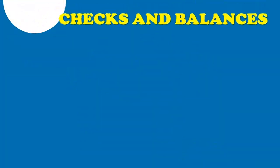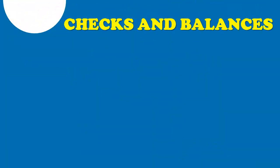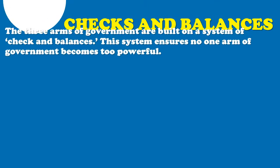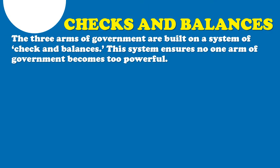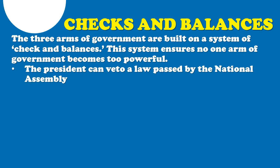The three arms of government are built on a system of checks and balance. This system ensures that no arm of government — whether it's the executive, the judiciary, or the legislature — becomes too powerful. Each arm of the government is to be checked. Because you are the executive or under the judiciary does not mean you will not be checked.